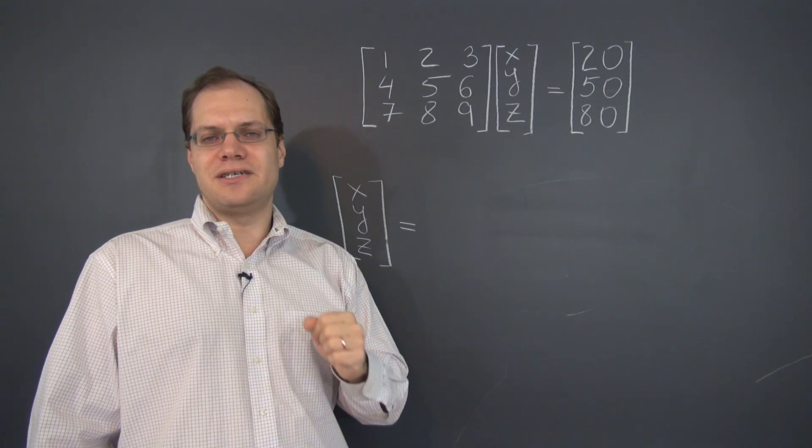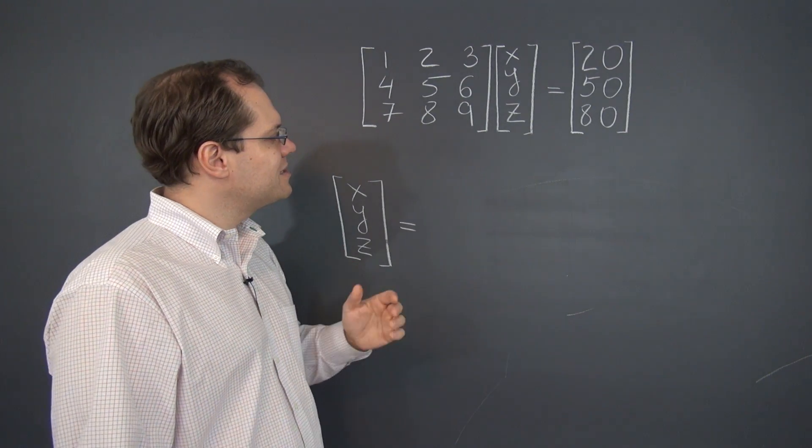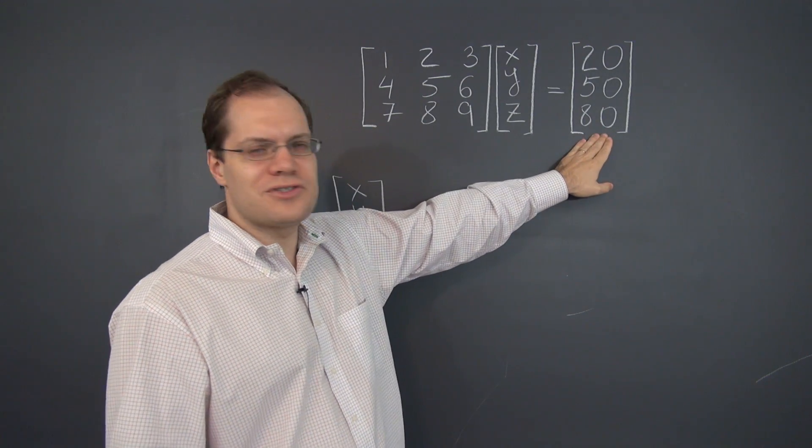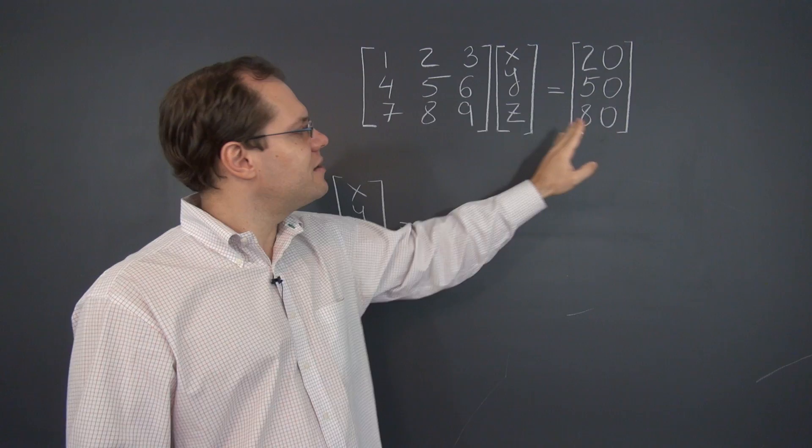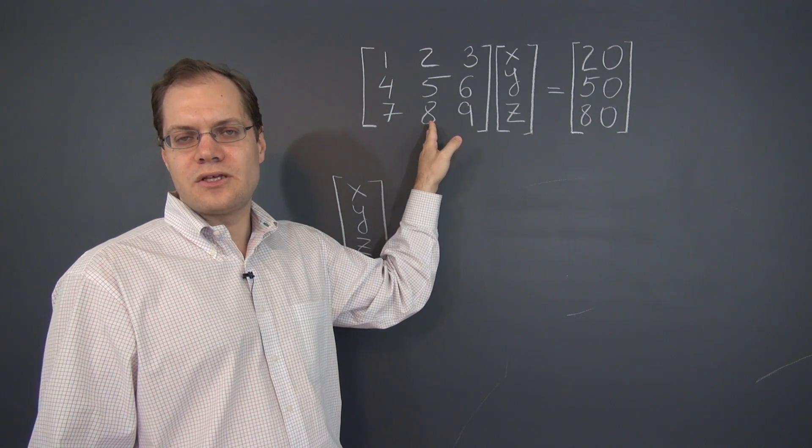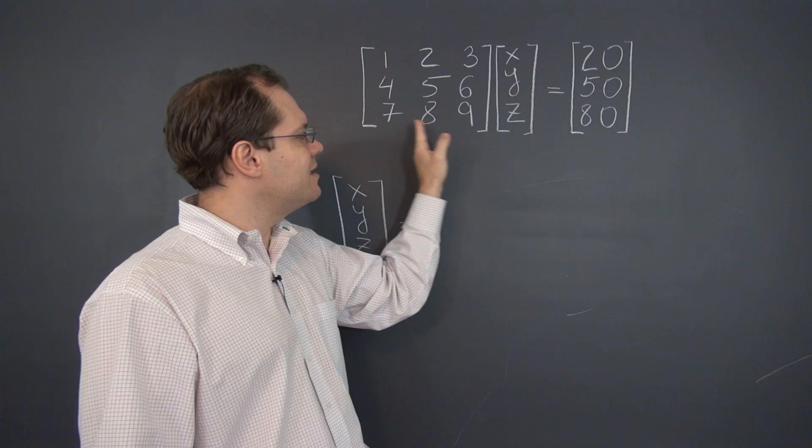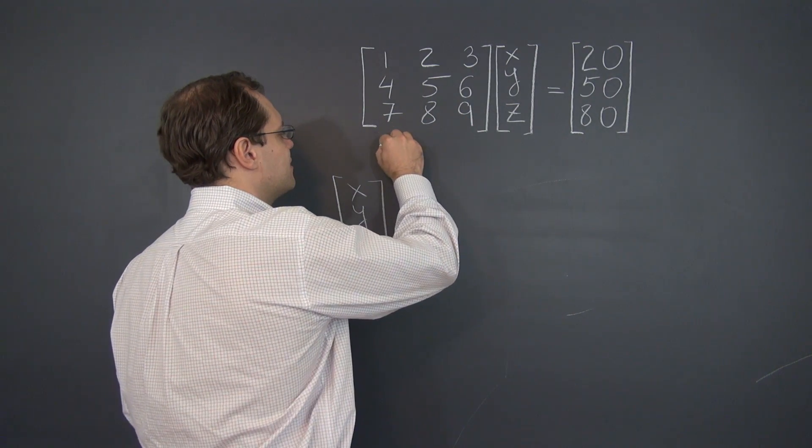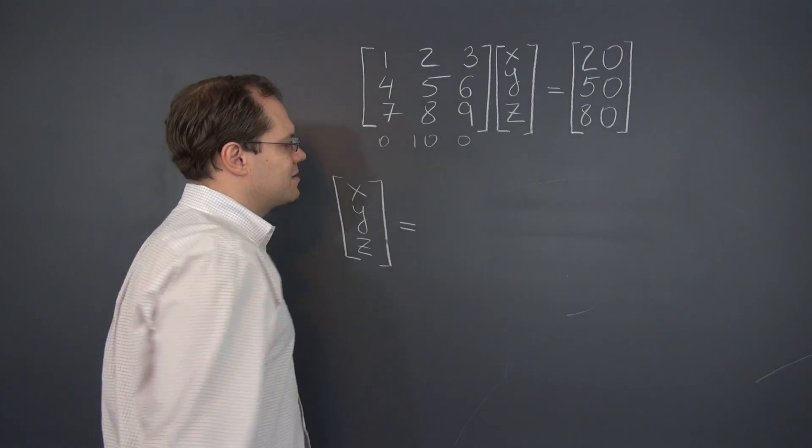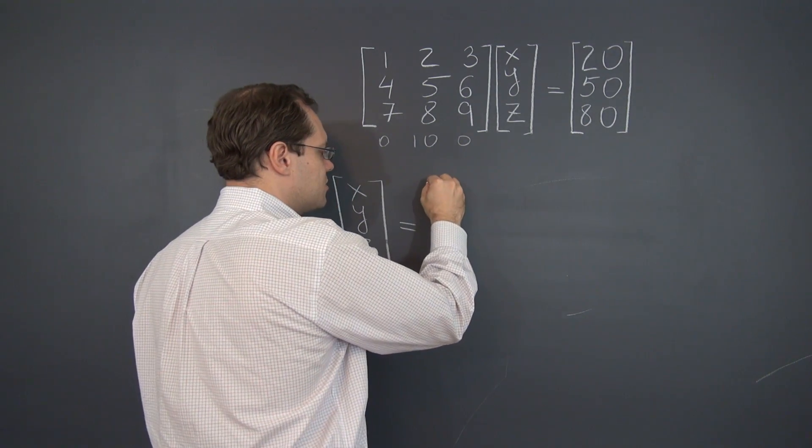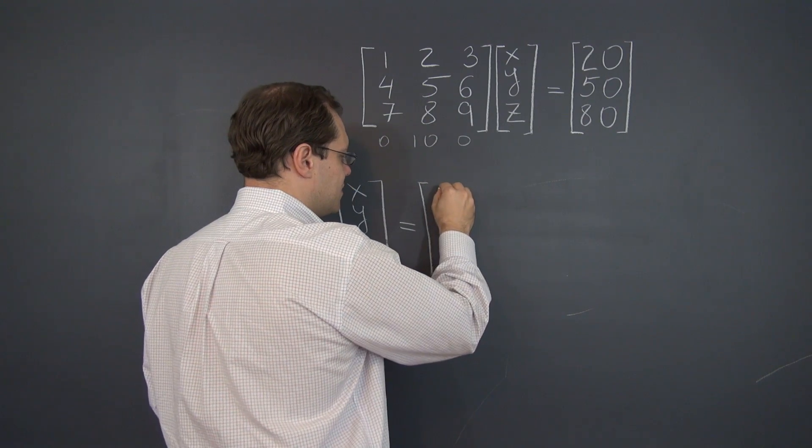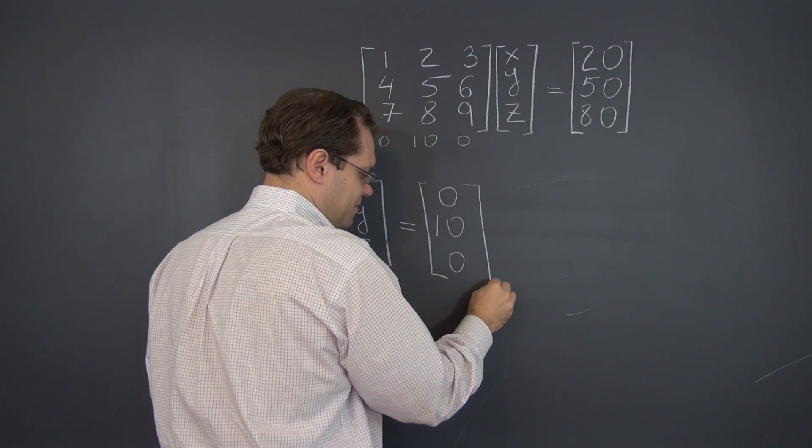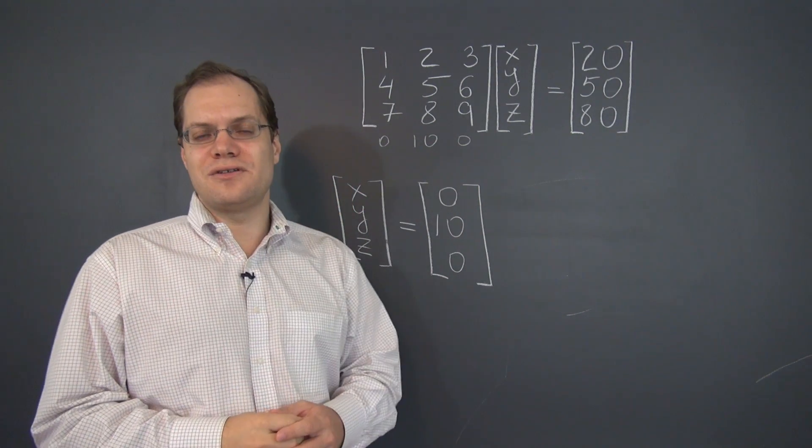So let's identify the particular solution first. And in this case, I think it's especially easy because it almost strikes you that the right-hand side is 10 times the middle column. So in order to obtain the right-hand side by a linear combination of the columns of this matrix, we need to take 0 of this column and 0 of this one and 10 of the middle column. So here we will write this as a column, 0, 10, 0. And we're done with a particular solution.